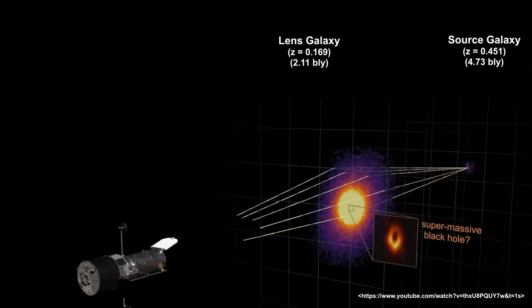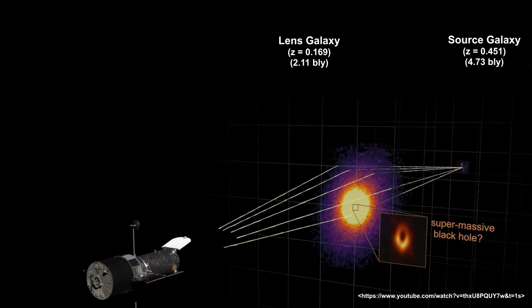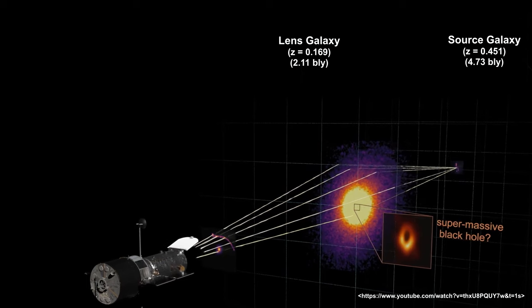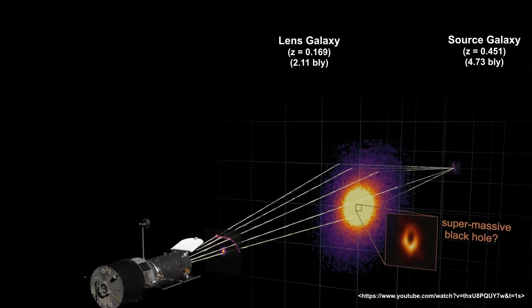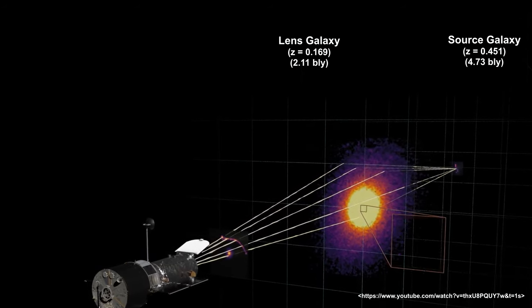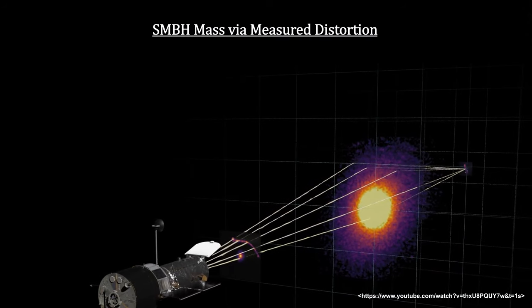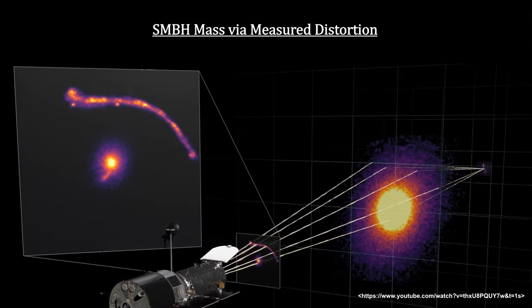The light passes within 3,000 light years of the supermassive black hole at the center of this lensing galaxy. We can't see the black hole, but we can see the distortions it creates.